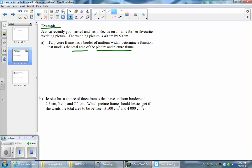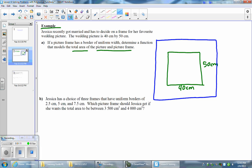So sometimes it helps to first draw a diagram of the problem. We have a picture and we know that it is 50 centimeters by 40 centimeters. Jessica wants to put a frame around it, so let's draw our frame. There is our frame and we aren't given a width of the frame but we know it's uniform, so let's let the width of this frame be equal to x.